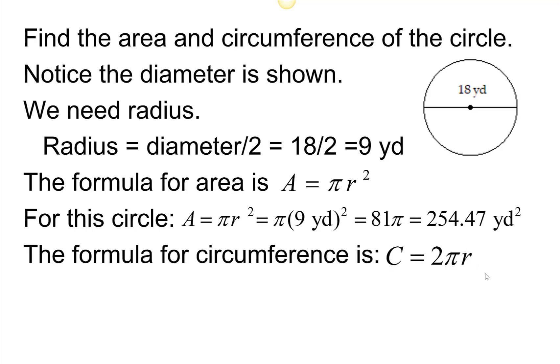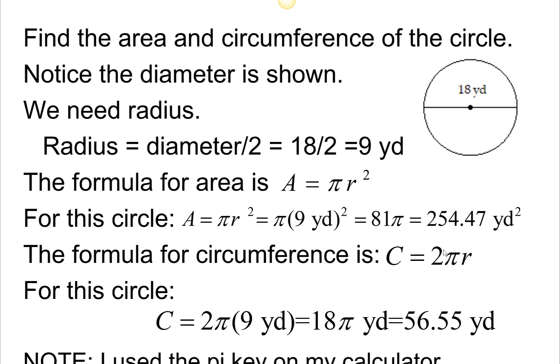For the circumference, it's 2 pi r. I'm going to put in 2 pi times the 9 yards, 18 pi yards, and I get 56.55 yards is the circumference or the distance around the circle. I use the pi key on my calculator for these calculations.